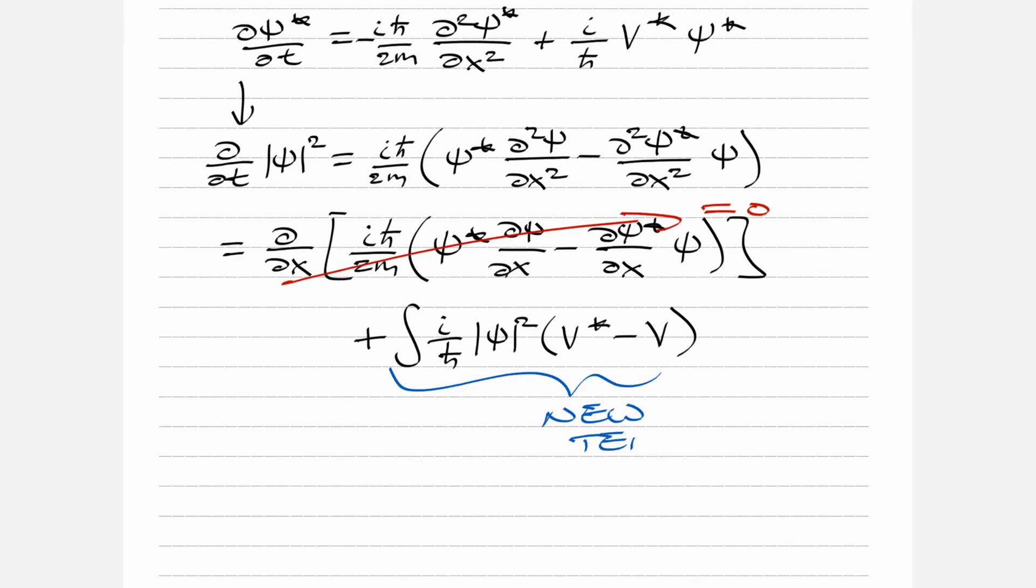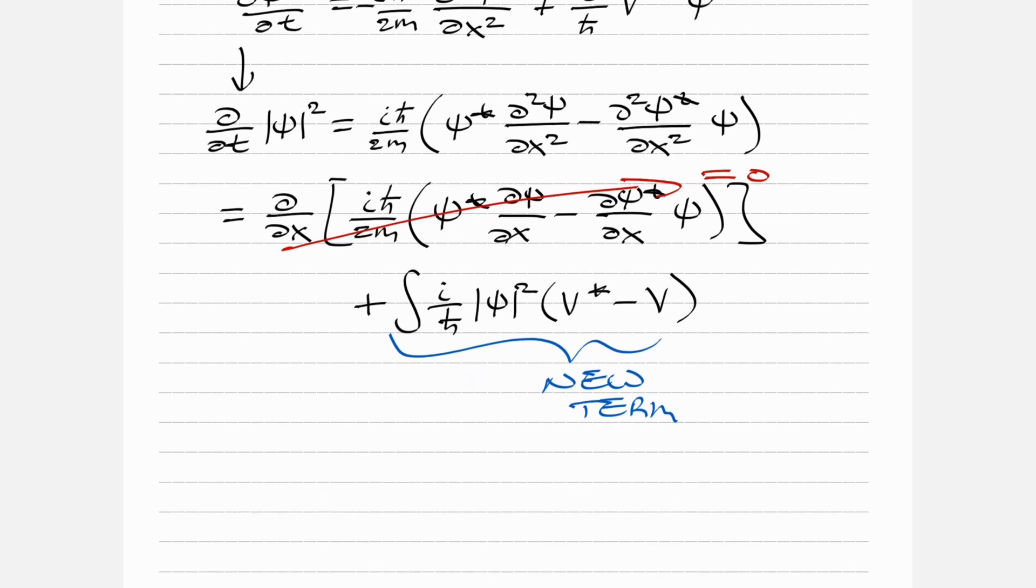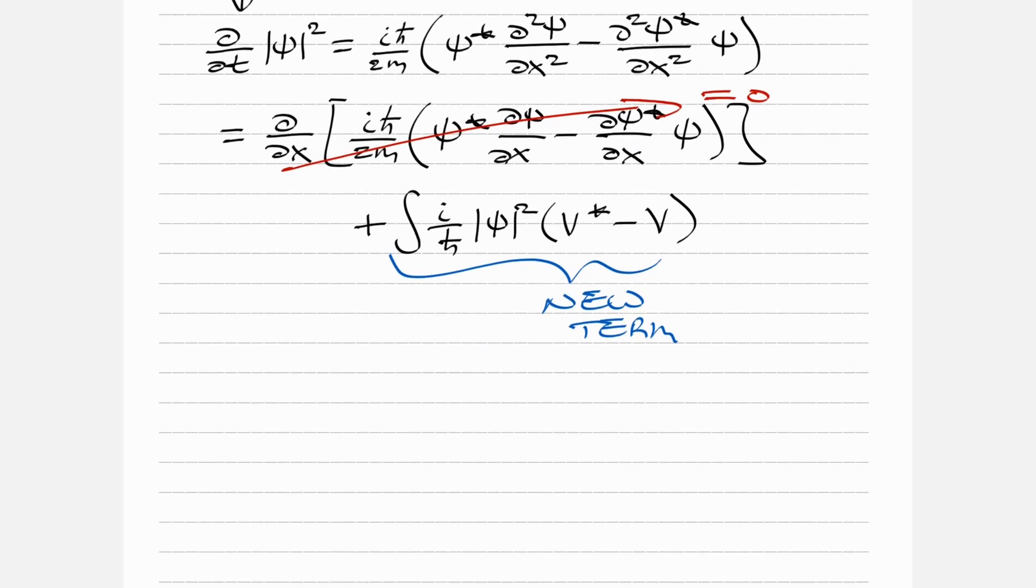Let's look at the new term - that's the whole point of this problem. We have i over ℏ bar times the integral of |ψ|² (V* - V), so let's do V* minus V.